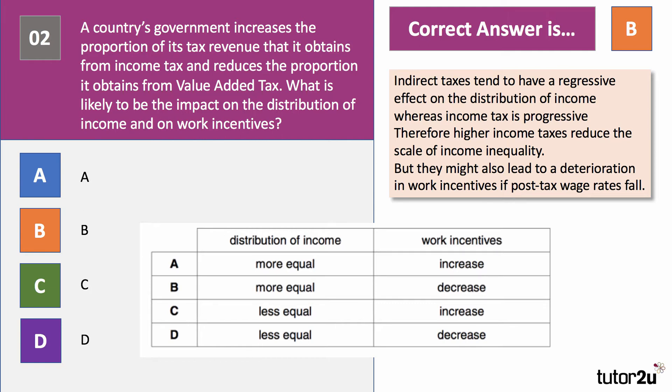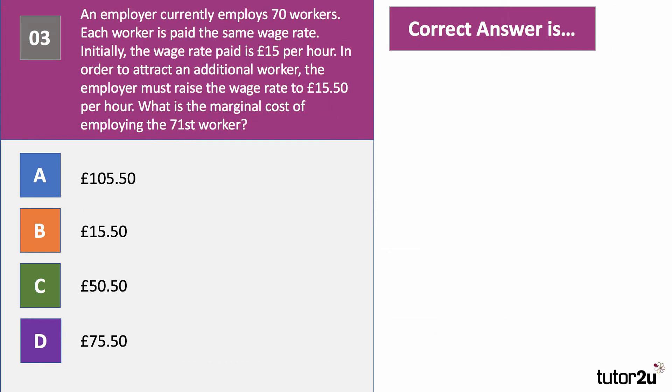Question three. An employer currently employs 70 workers, each paid the same wage rate. Initially, the wage rate paid is £15 per hour, but in order to attract an additional worker, the employer must raise the wage rate to £15.50 per hour. What is the marginal cost of employing the 71st worker? Press the pause button — I'll be back in a few minutes with the right answer.